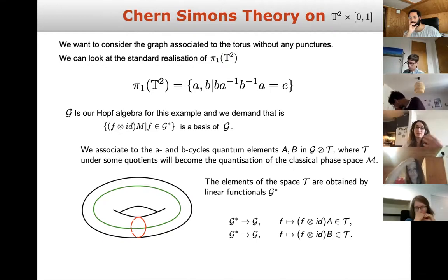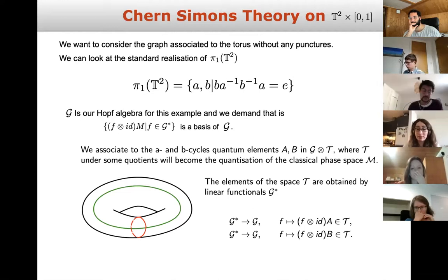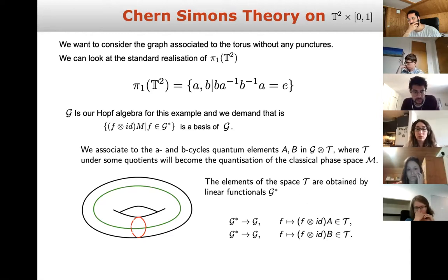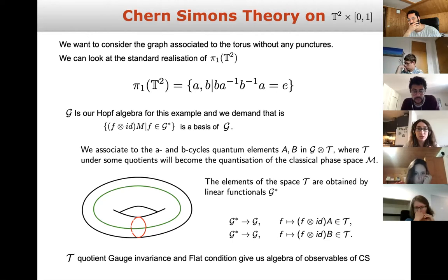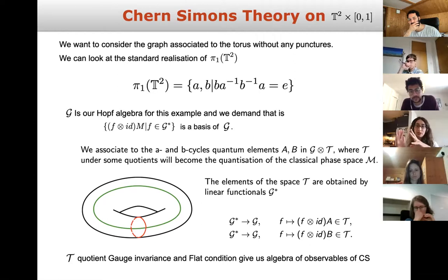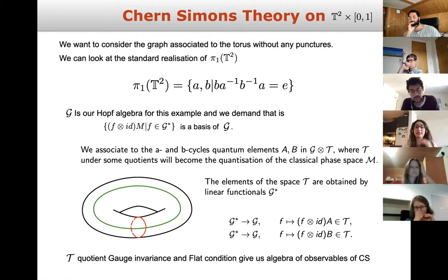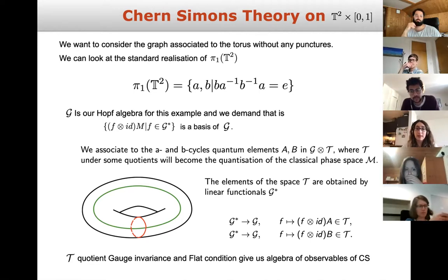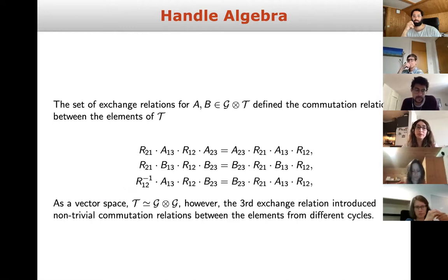The space in which A and B are defined is actually the Hopf algebra G tensor τ, where τ is called the handle algebra — a particular type of algebra defined by relations between A and B. It's defined as a space to help us perform the quantization of the classical phase space M. The handle algebra is the algebra we need to use; after taking the quotient by gauge invariance and flatness conditions, it gives us the algebra of observables.